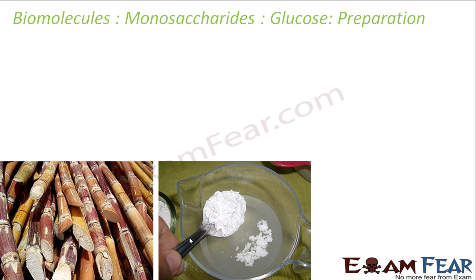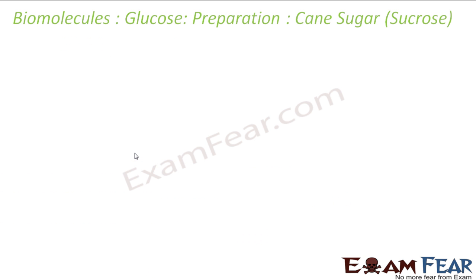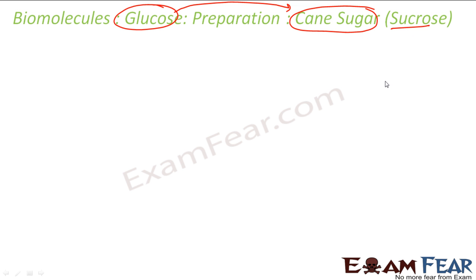Glucose is prepared from two sources in industry. The first is from cane sugar, called sucrose, which is a disaccharide. The second is from starch and cellulose — cellulose is essentially wood. We will start with the first method: preparation of glucose from cane sugar, that is sucrose.